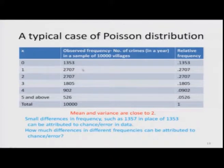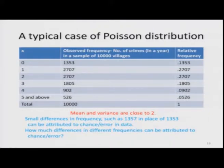Looking at the nature of the data — as the value of x rises, probabilities initially rise then fall, and it is a discrete variable — one can also calculate the mean and variance and find them close to 2. The researcher then decides that the Poisson distribution will fit these data.